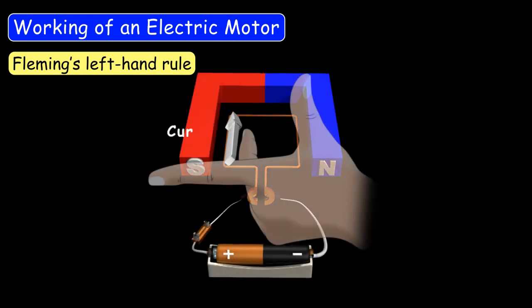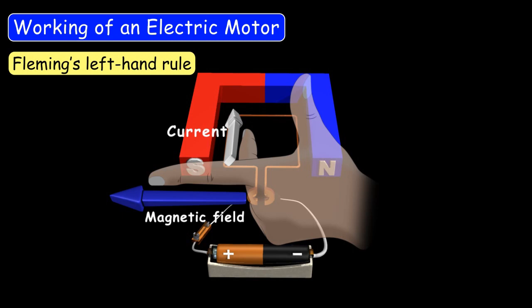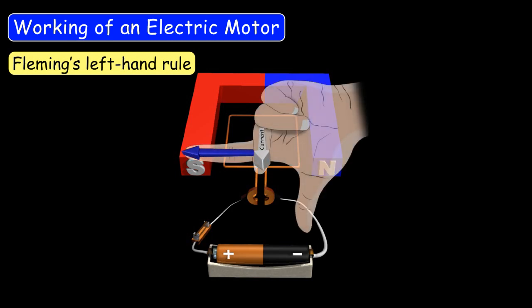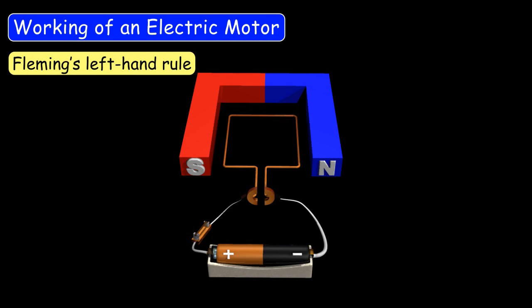On the left side of the coil, this is the direction of the current and this is the direction of the magnetic field. So if we apply the left-hand rule here, the mechanical force experienced by the coil on the left side will be upwards. And on the right side of the coil, this is the direction of the current and this is the direction of the magnetic field. So the mechanical force experienced by the electromagnet will be downwards. The two sides of the electromagnet are experiencing mechanical force in opposite directions — the left side upward and the right side downward — because of which it starts rotating.